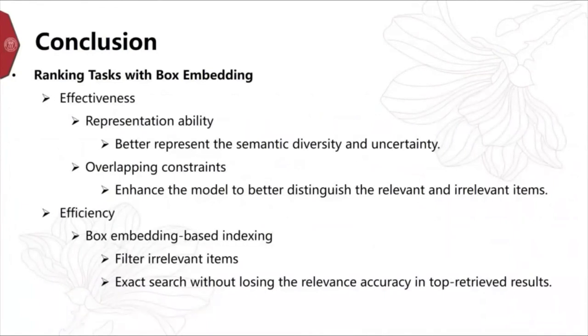In conclusion, in this paper, we propose to improve the effectiveness and efficiency for ranking tasks by incorporating the recently proposed box embeddings. For effectiveness, the box embedding can better represent the semantic diversity and uncertainty. The overlapping constraints are introduced to enforce the model to better distinguish the relevant and irrelevant items. For efficiency, box embedding-based indexing methods are designed, and it can filter the invalid items and reduce the visiting time without losing the relevance accuracy in top retrieval results.